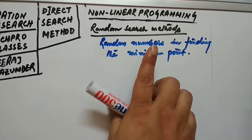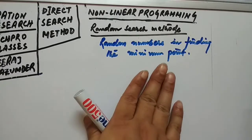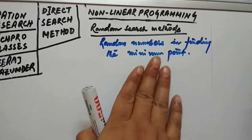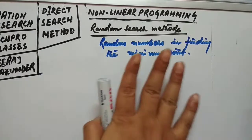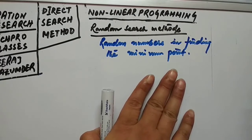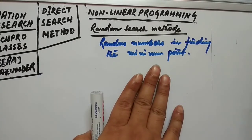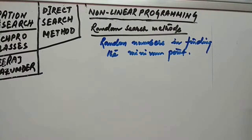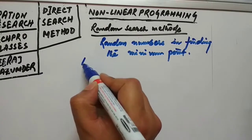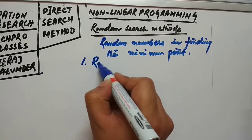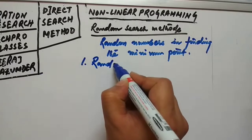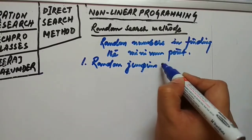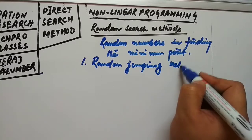Most computer libraries already have random number generators, so these methods can be used quite conveniently. Some of the best random methods include the random jumping method, also called the random search technique.